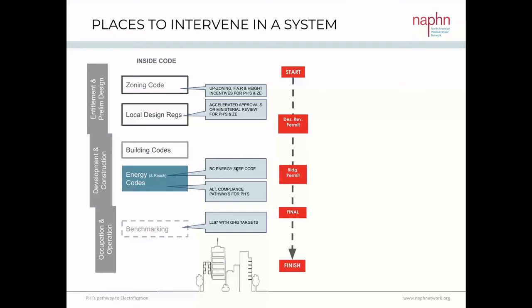The BC Energy Step Code is a mechanism with alternate pathways embedded that go around the regular code structure — Passive House is one of them, and building to the top step is a way to fast-track electrification. Washington State has an alternate compliance path for Passive House already embedded in the code. New York City's Local Law 97 sets benchmark requirements for existing large buildings at a greenhouse gas emission target — a fantastic accelerator outside of the energy code that is focused on accelerating decarbonization with a GHG emissions metric.